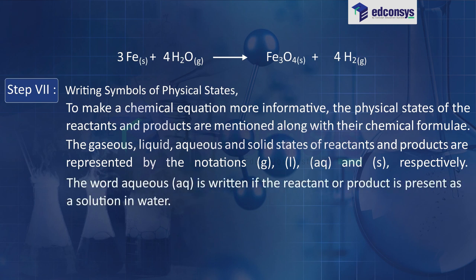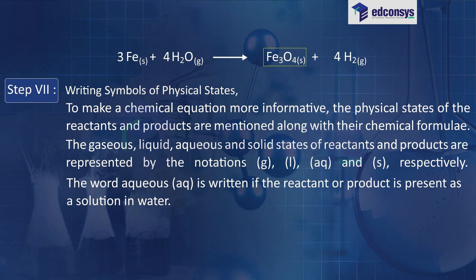The word 'aqueous' is written if the reactant or product is present as a solution in water. The balanced equation with state symbols becomes: 3Fe(s) + 4H₂O(g) → Fe₃O₄(s) + 4H₂(g). Note that the symbol g is used with H₂O to indicate that in this reaction water is used in the form of steam.